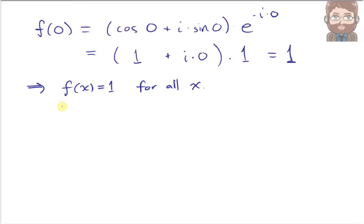So f(x), as you might recall, is the function cosine x plus i times sine x times e to the negative ix. We now know that is always equal to 1.